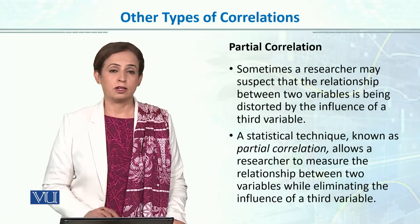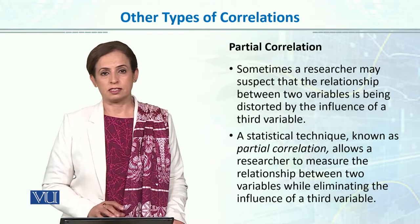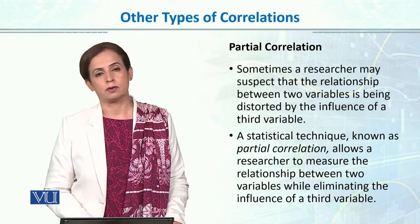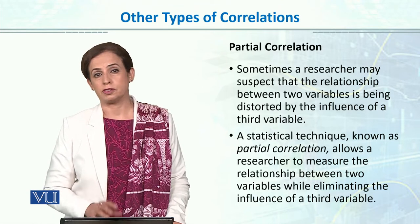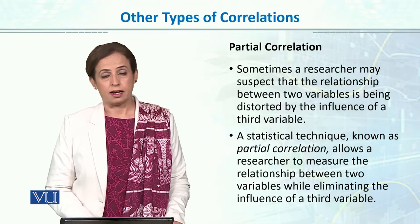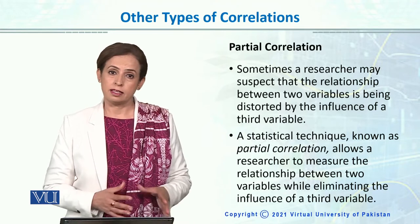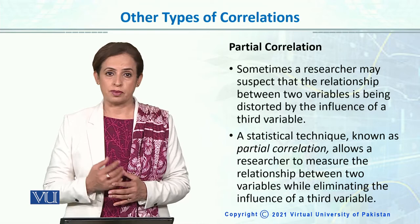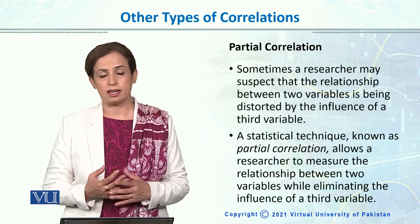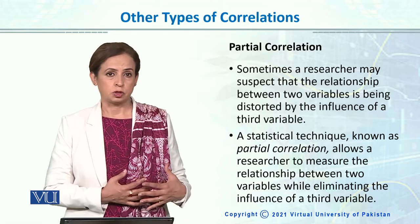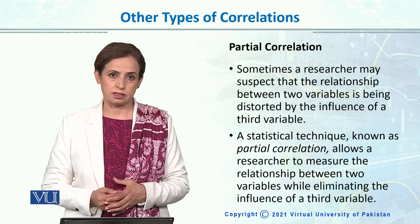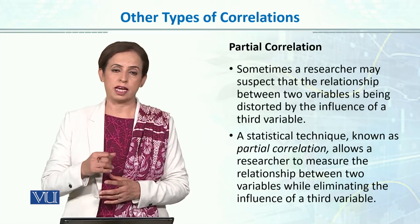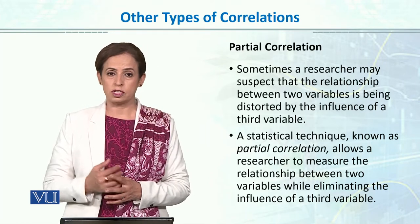Whenever we are conducting research, especially correlational research, most of the time we are using the Pearson product-moment correlation method, which we covered in our last lecture. But there are other types of correlation as well, depending upon the type of data, type of scale, situation, or the type of variables. I will briefly go over a few important types of other correlational methods.